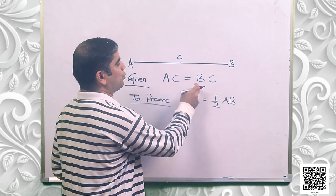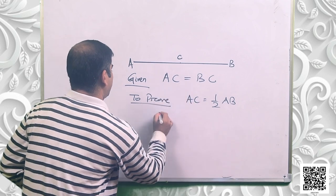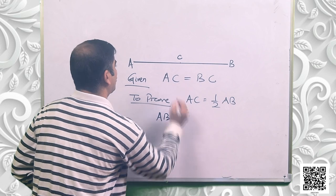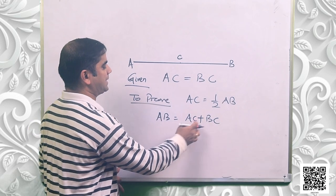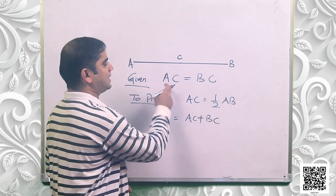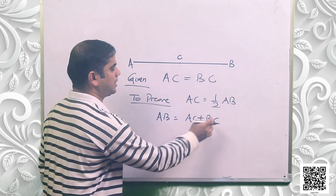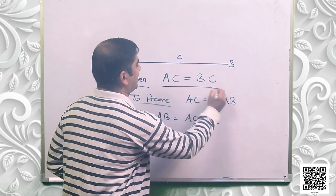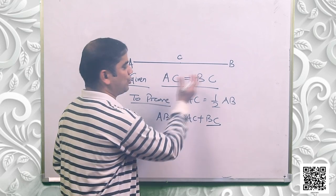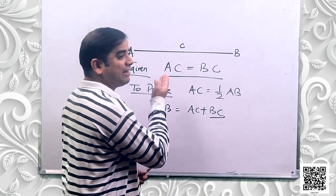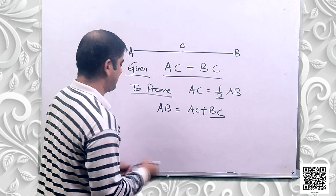So, AC is equal to half AB. We know AB is equal to AC plus BC. It is given that C divides AB into two equal parts, so AB is equal to AC plus BC. As per the given data, AC is equal to BC, so I can replace BC by AC.